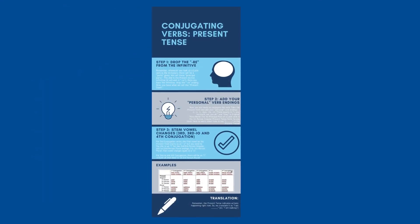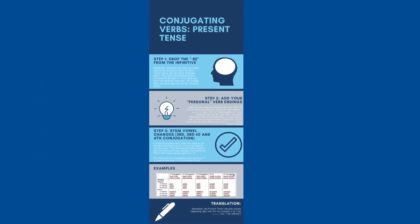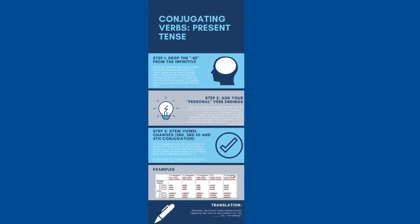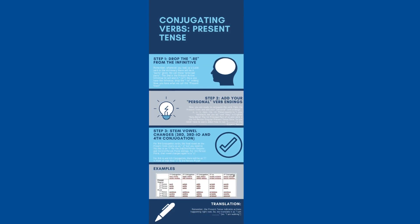One way to think about this is the infographic I use for students — feel free to pause the video. It breaks the steps down: identify your conjugation, then for all present tense verbs, go to the infinitive, drop the '-re,' and add your endings. For third, third -io, and fourth conjugation verbs, you have to play around with that final vowel on the present stem and adjust it a little bit.